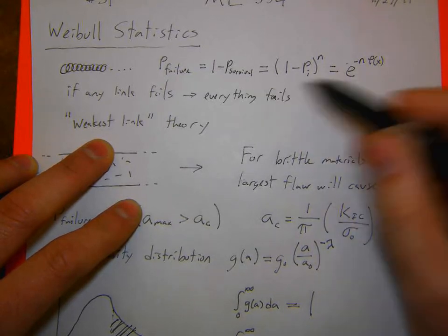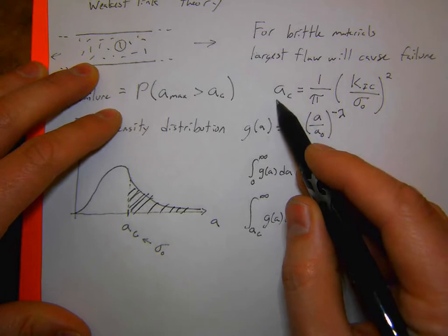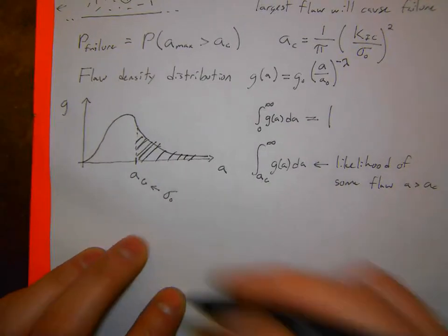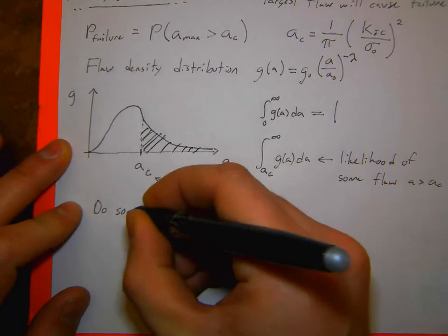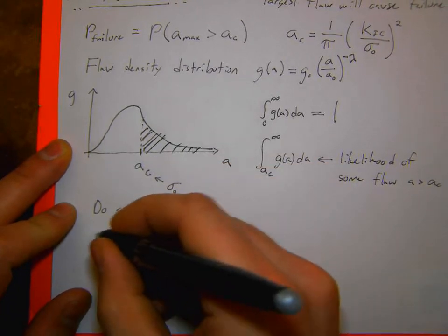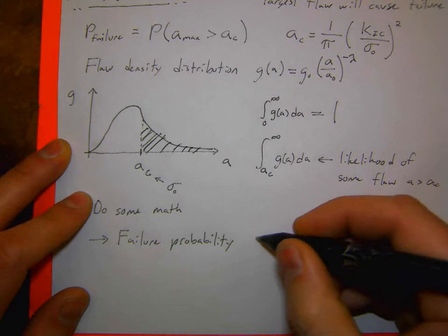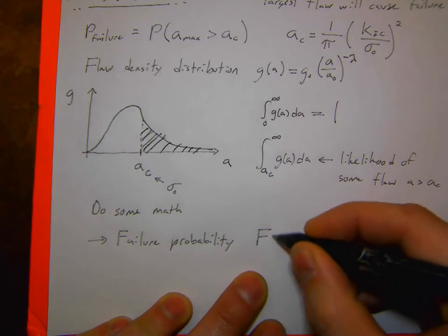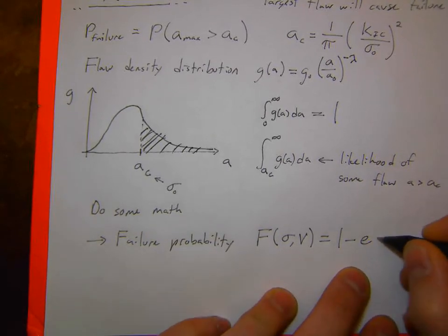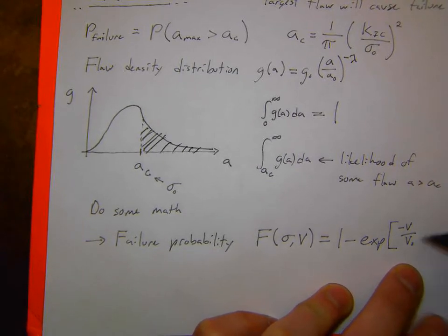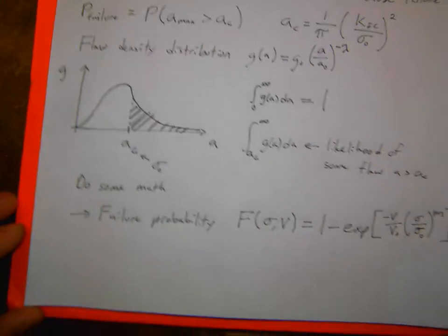Using that exponential relationship, the distribution of flaws, and the relation between critical flaw size and fracture strength, we combine them, take a couple of integrals, and what we end up with is the probability of failure in a material. After doing some math, the failure probability of a brittle material in terms of stress and volume of the part is: F = 1 − exp[−(V/V₀)(σ/σ₀)^m].